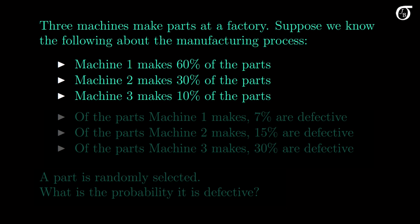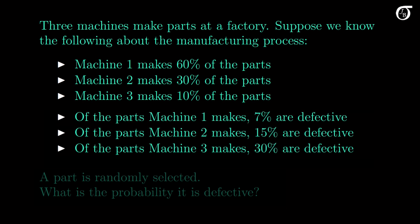Three machines make parts at a factory. 60% of the parts are made by machine 1, 30% by machine 2, and 10% by machine 3. Each part is made by one and only one of the machines. Of the parts machine 1 makes, 7% are defective. For machine 2, 15% of the parts are defective, and it's 30% for machine 3. Suppose a part is randomly selected, and we want to know the probability it's defective.